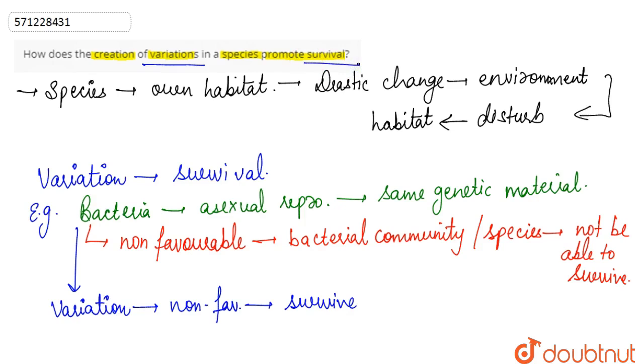Variation comes up in sexual reproduction. In case of asexual reproduction, sometimes while copying the DNA, some variations come up, so those little variations help in survival of the species.